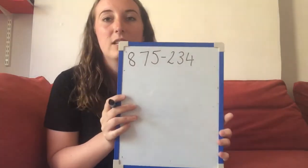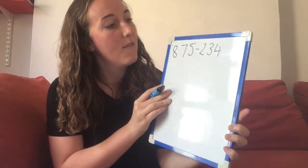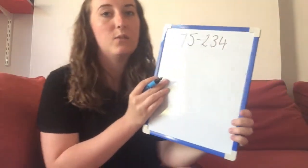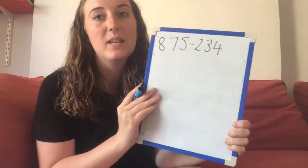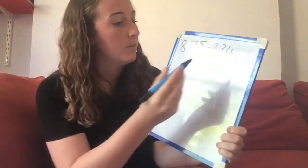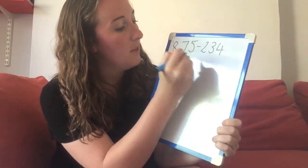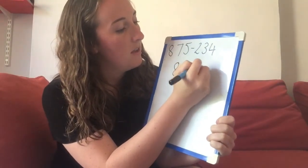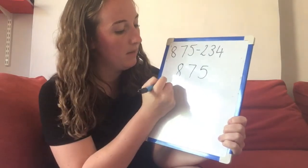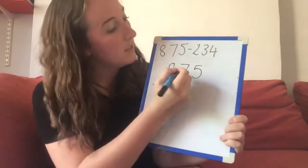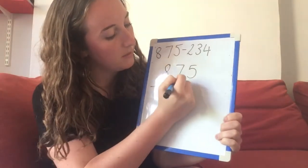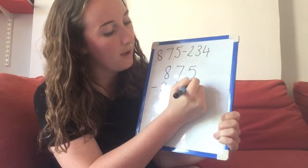The first example we're going to do is column subtraction with no exchange, and this is just so we can remember what compact column subtraction looks like. My first calculation is 875 take away 234. The first thing I'm going to do is lay out my column subtraction. I take my first number and write it, then my subtraction symbol, and underneath I write my second number — that's the number we're taking away.